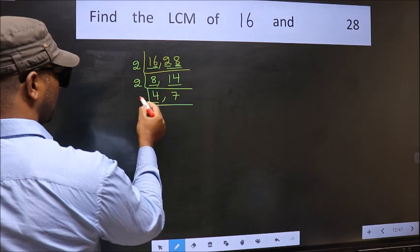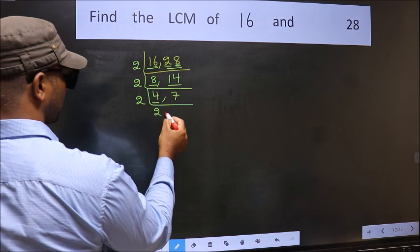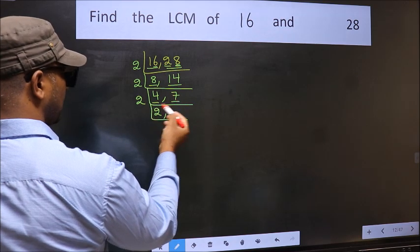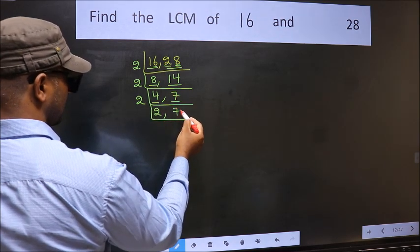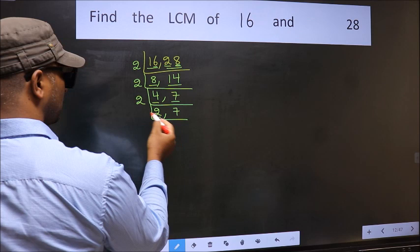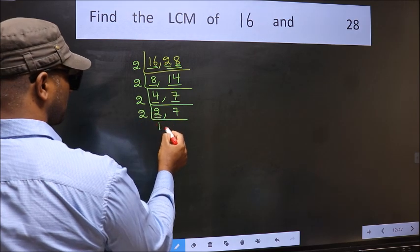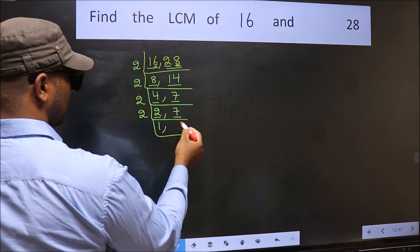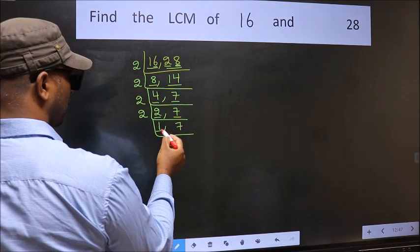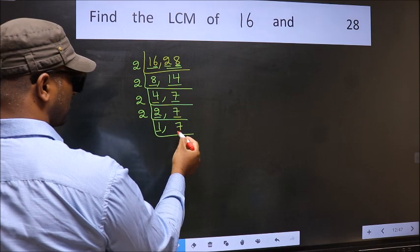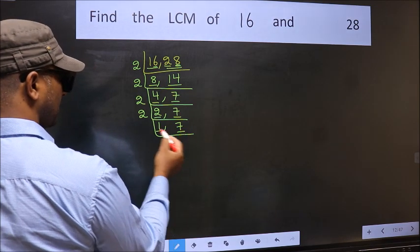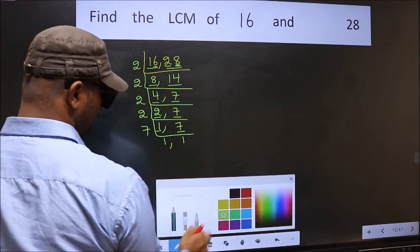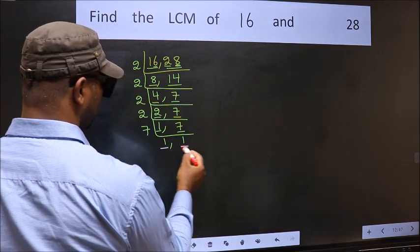Now here we have 4. 4 is 2, 2 is 4. The other number 7 is not divisible by 2, so we write it down as it is. Now here we have 2, which is a prime number, so 2, 1 is 2. The other number 7 is not divisible by 2, so we write it down as it is. We got 1 here, so focus on the other number 7. 7 is a prime number. So we got 1 in both places.